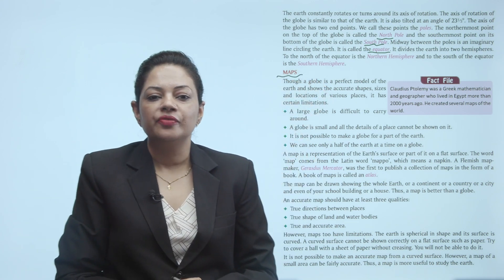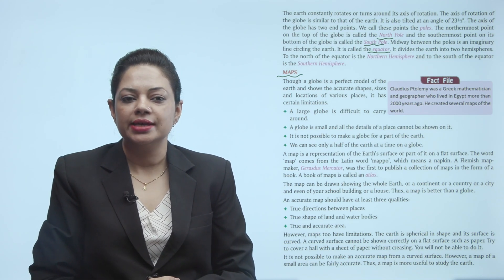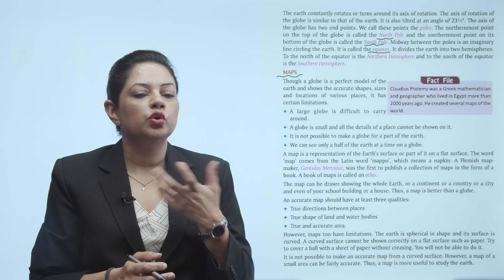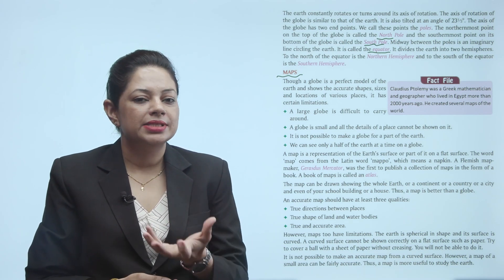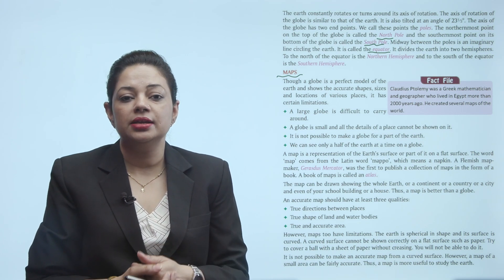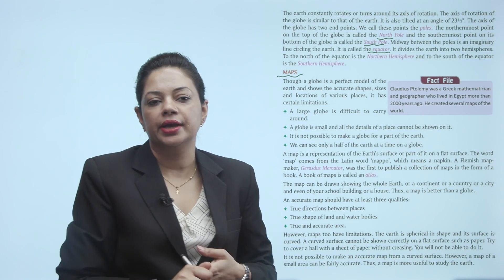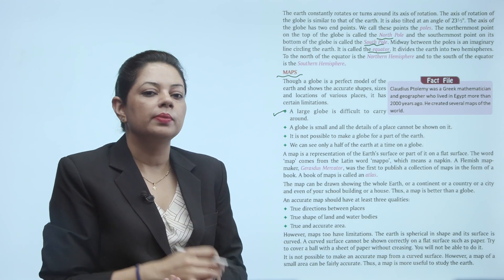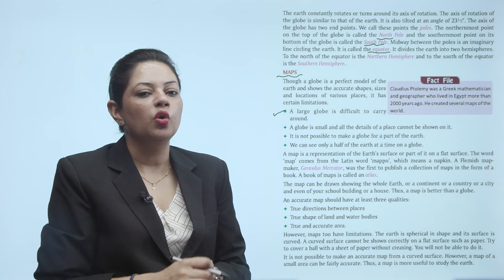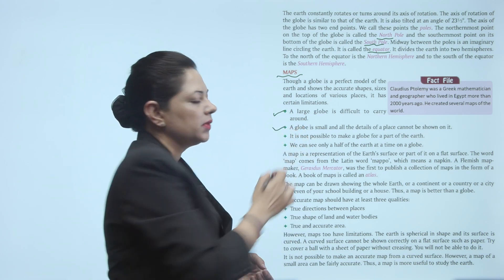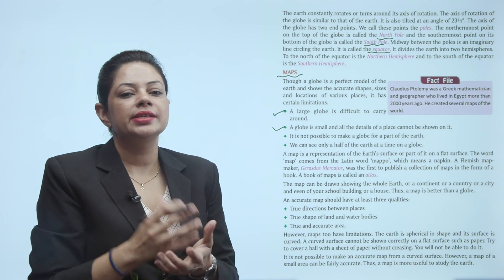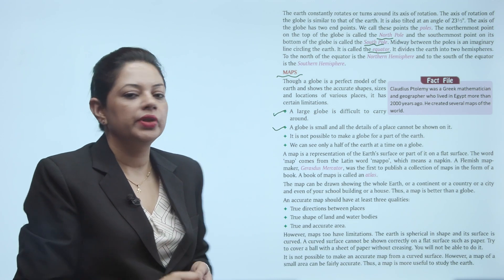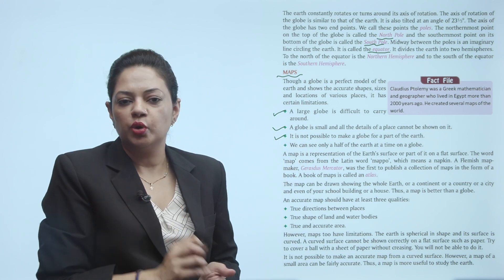A globe is the perfect model of the Earth and shows the accurate shape, size and locations of various places, but it has certain limitations. Globe ek true model hai Earth ka lekin uske bawajood uske kuch limitations hain — jaise ki ek bada globe carry karna mushkil hota hai, globe par kisi bhi place ki detailing show nahi kar sakte, aur globe sirf poore Earth ka model hota hai, Earth ke kisi ek part ka globe banana possible nahi hai.